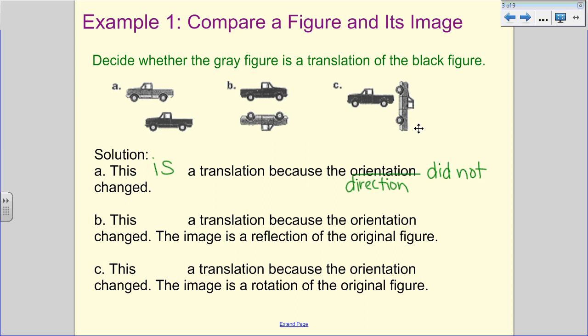If we look at B, B is not a translation because the orientation has changed. The image, this gray car, is what we call a reflection. Think of looking in the mirror. It's the opposite of it. They fold in half. And then C is not a translation because the orientation, once again, has changed. It's not facing the direction. And so this is what we would call a rotation. We took this and we spun this figure and we turned it at a 90 degree angle.